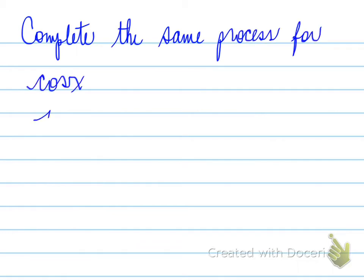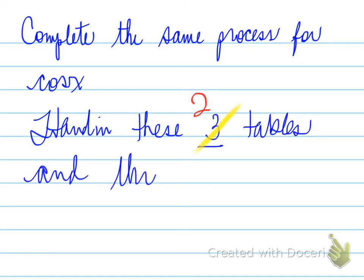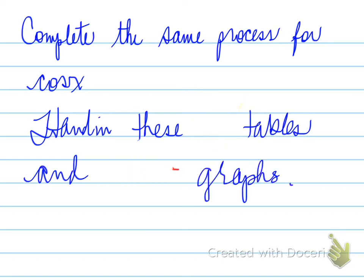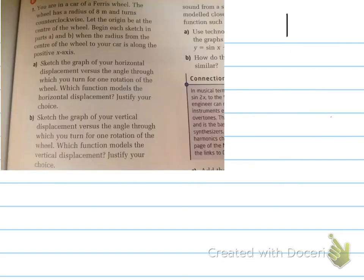Complete the same process for the cosine function and hand in these two tables and two graphs — four tables total, approximate and exact, and the two graphs. We're not going to look at tangent until Grade 12; we're only looking at sine and cosine. Now let's look at some examples so that you can understand how to approach this problem.